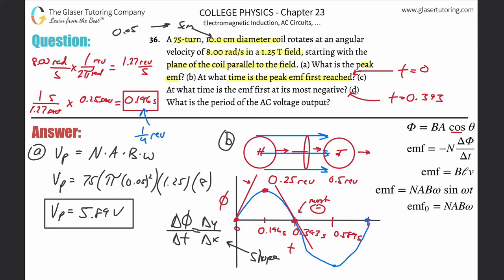Part (d): what is the period of the AC voltage output? The period is T = 2π / ω. Our angular velocity is 8 radians per second, so T = 2π / 8 ≈ 0.785 seconds. That is the period.